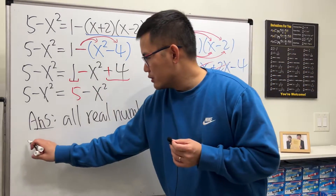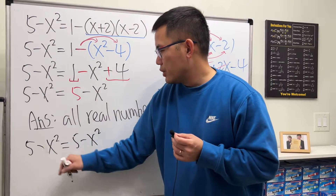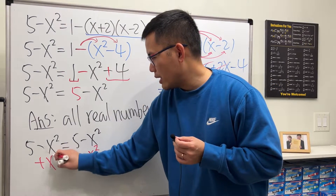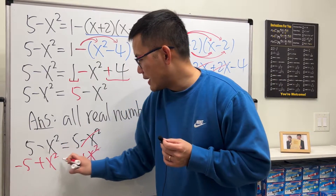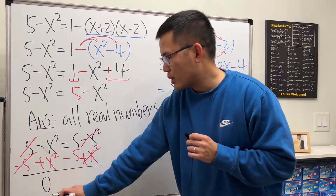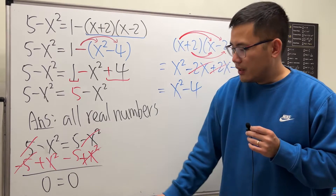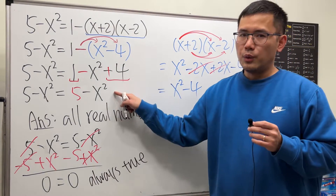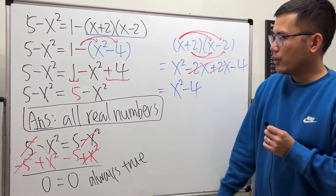If you want to continue algebraically, you can write 5 minus x squared equals 5 minus x squared. Add x squared to both sides — those cancel. Then subtract 5 from both sides — those cancel too. You get 0 times x squared equals 0, which simplifies to 0 equals 0. This is always true, confirming the solution is all real numbers.